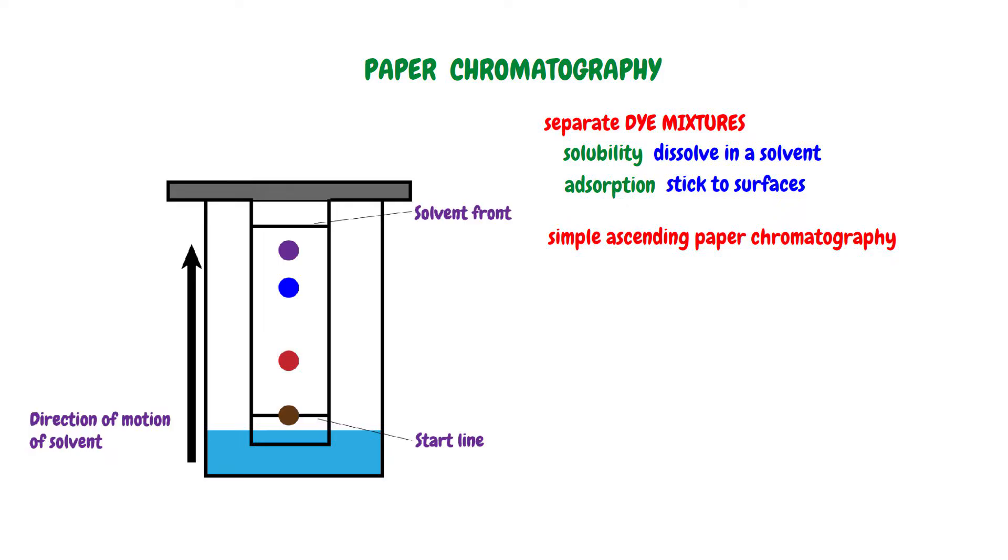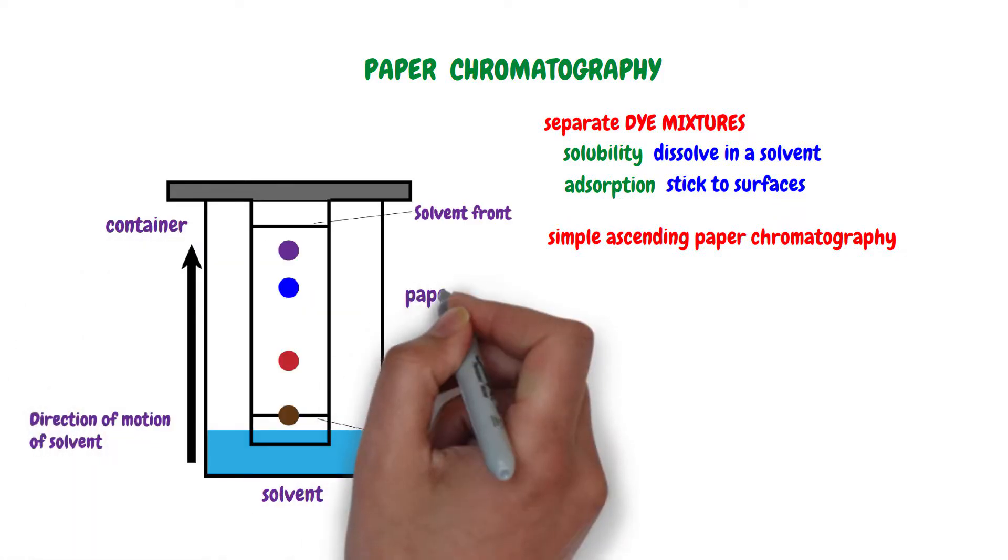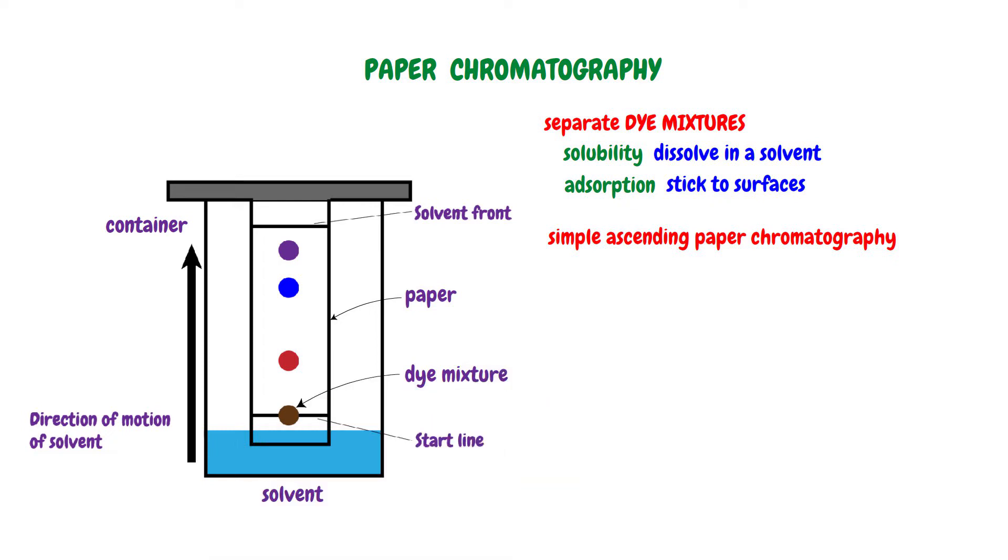The process begins with the preparation of the setup comprising a container, solvent, paper, and the dye mixture to be separated. Then draw a baseline near the paper's end with a pencil known as the start line. A pencil is used because it does not dissolve in the solvent.